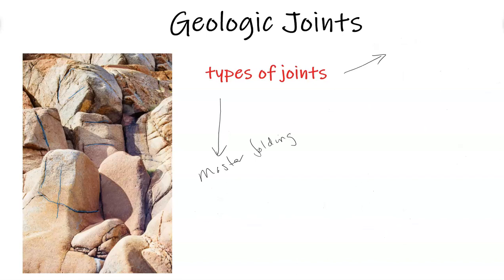Then you got master folding which occurs with sedimentary and a lot of limestone formations. Basically this is in between the weak areas of the limestone, usually the shells, and you get these long horizontal joints that kind of continue throughout the entire bedding of the limestone.